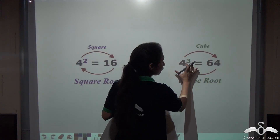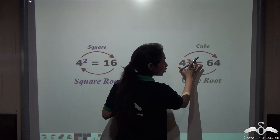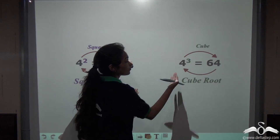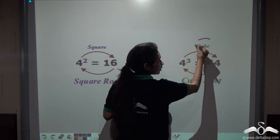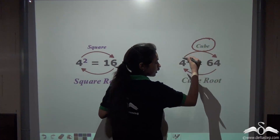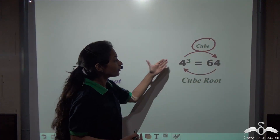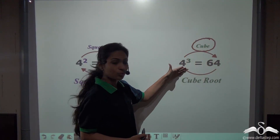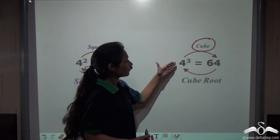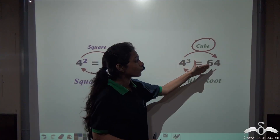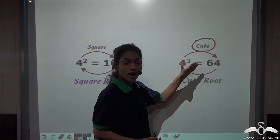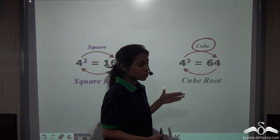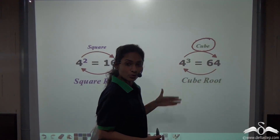Similarly, if the number 4 is cubed — that is multiplied with itself 3 times — we get 64. So we cube this number, and the inverse operation of this cube is called the cube root, where we can derive 4 back from 64 after cube rooting 64. So this is called cube root.